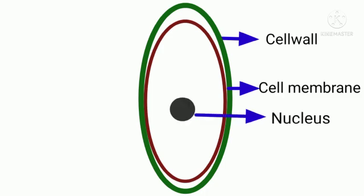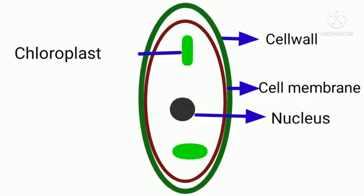Inside the cell, we can see nucleus. Green colored chloroplast is present in plant cell.